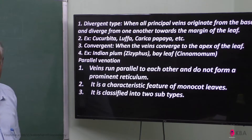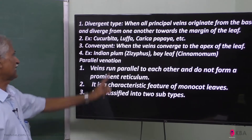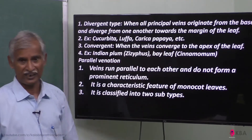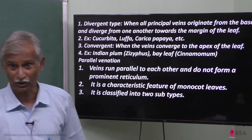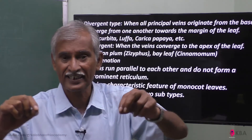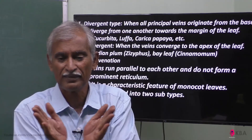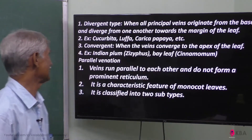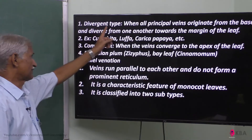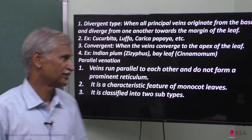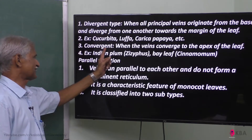From the base, two and three main veins diverge from one another towards the margin of the leaf. The main veins originate from a single point at the base and diverge towards the margin of the lamina.